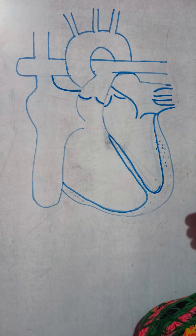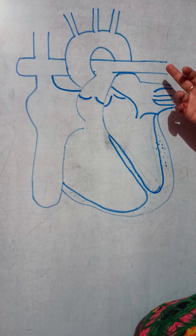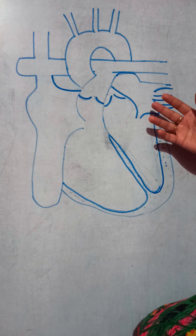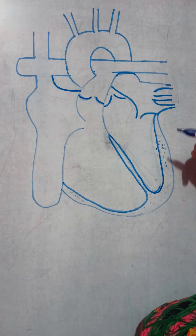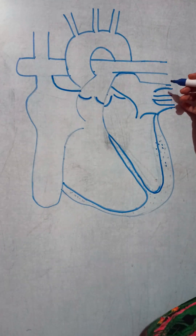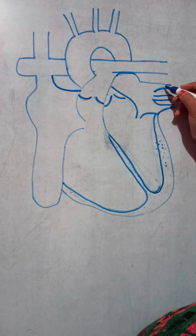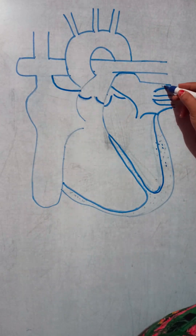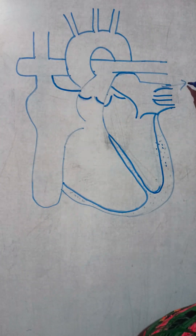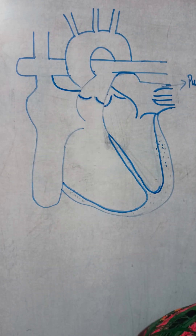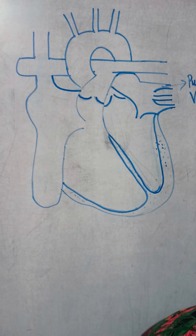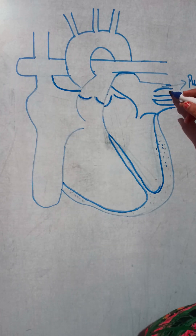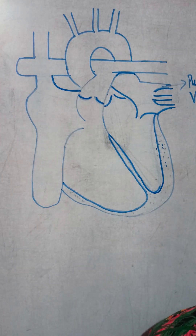One by one I would like to tell you the different vessels and the chambers which are present in our heart. So let's begin. Here you can see these are the four vessels. We call them pulmonary veins. The word pulmonary means lungs.